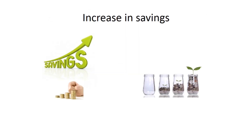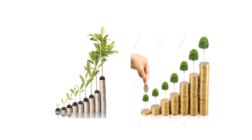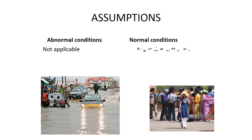There is no decrease in both consumption and saving. These three propositions are based on some assumptions. The law assumes the existence of normal conditions — the law holds good under normal conditions, with no abnormalities. Abnormalities like war, revolution, and flood mean the law will not operate.